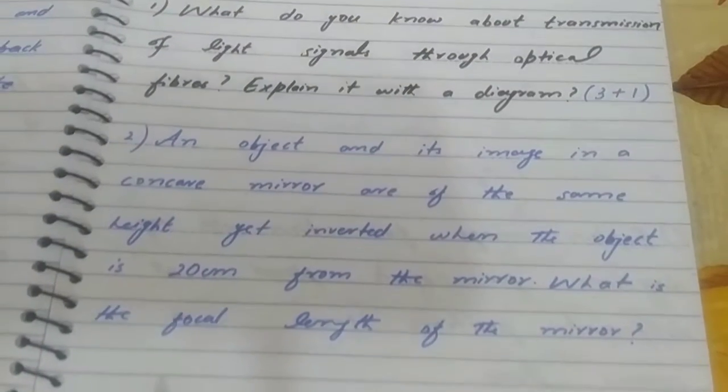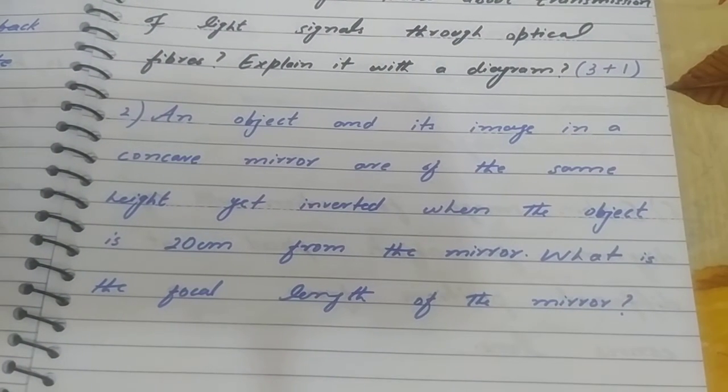Question number two: An object and its image in a concave mirror are of the same height yet inverted when the object is 20 centimeters from the mirror. What is the focal length of the mirror?